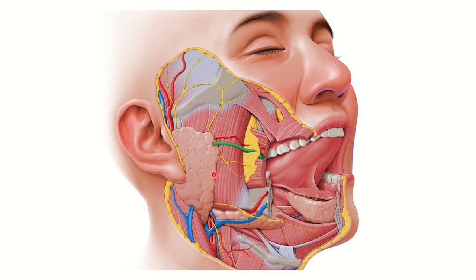The parotid duct travels to the anterior aspect of the masseter and then pierces the buccinator muscle. It opens into the mouth — specifically into the vestibule of the mouth — opposite the second upper molar tooth.